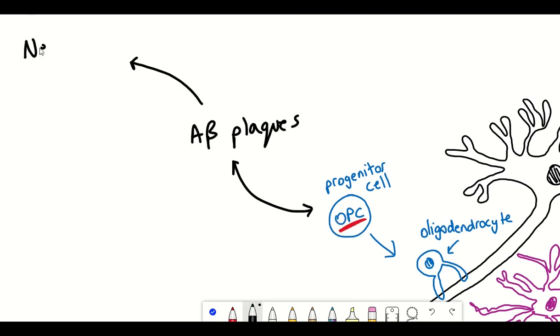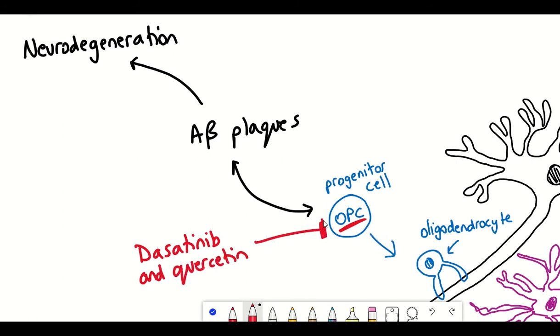In this study they also used senolytics, the combination of dasatinib and quercetin, which reduced the presence of these senescent OPC cells and they consequently saw reduced amyloid beta plaque loads and improved cognition.